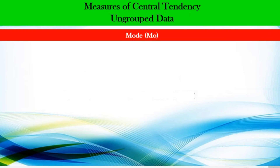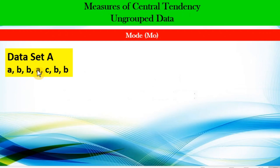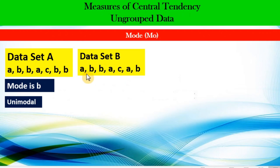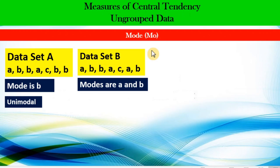Another example: given a simple dataset, let us identify the most frequent data point. For dataset A with seven data points, the most frequent is B — because there is only one mode, we call this dataset unimodal. Another dataset: for dataset B, also with seven data points, there are more than one mode — in fact two: A and B. The frequency for A is three and the frequency for B is also three, so both are modes. We call this dataset bimodal because there are two modes.